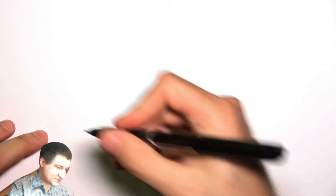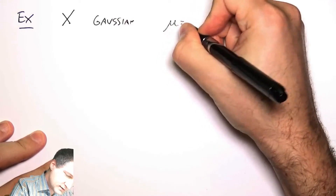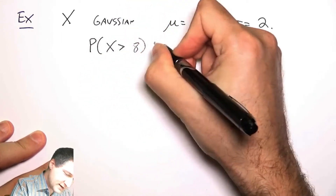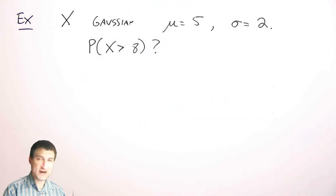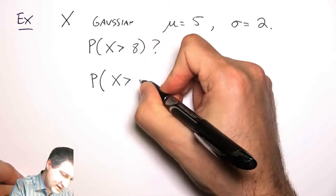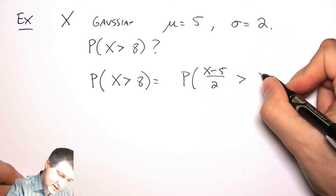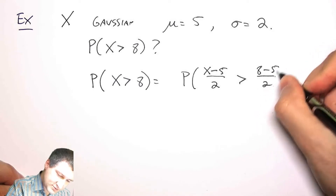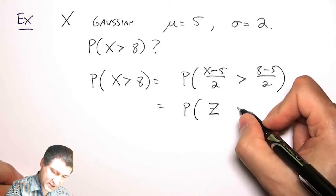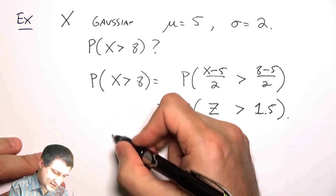Suppose that X is Gaussian with mean mu equal to five and standard deviation equal to two. What is the probability that X is greater than eight? We have to convert this to something we can find in a table. The probability that X is greater than eight is the same as the probability that (X minus five) over two is greater than (eight minus five) over two. This new random variable is Gaussian with mean zero and standard deviation one, and the right-hand side is the number I can look up in the table.